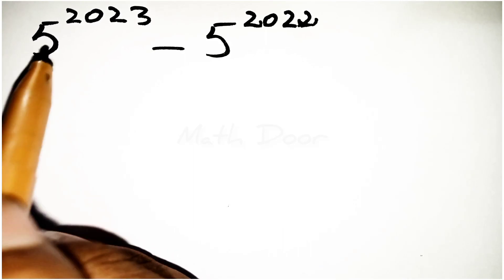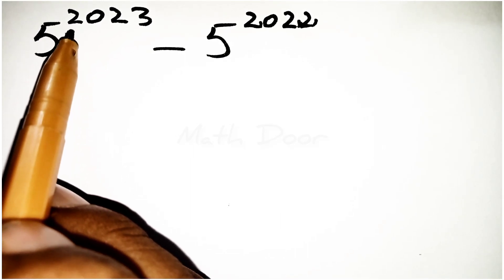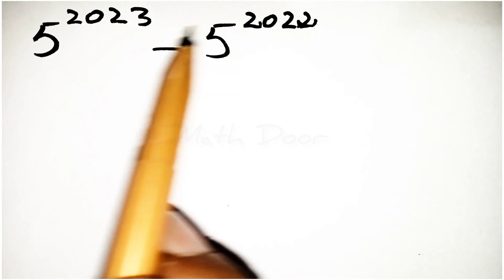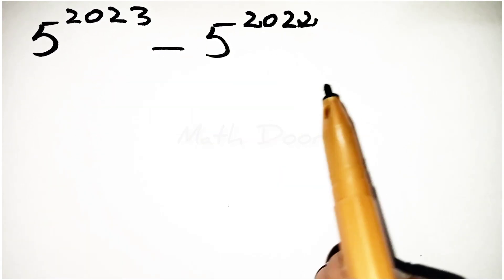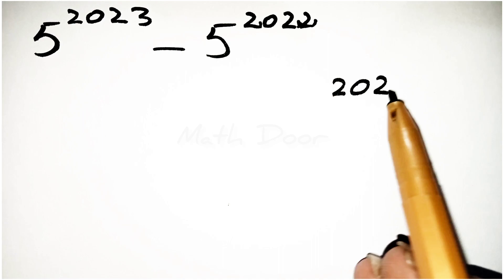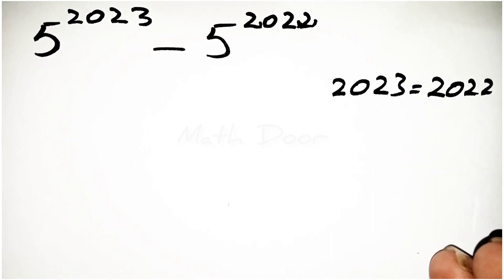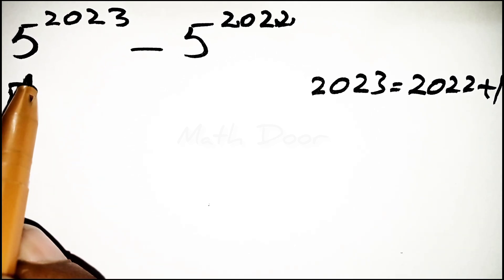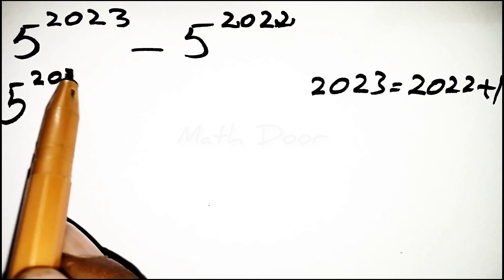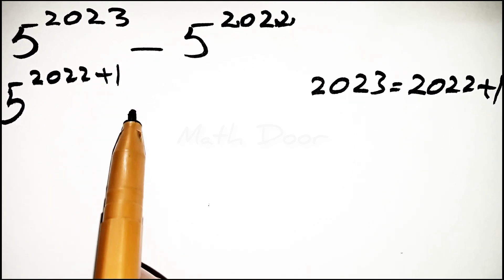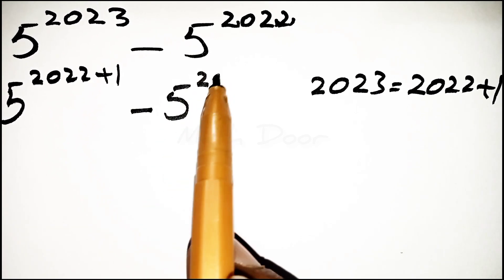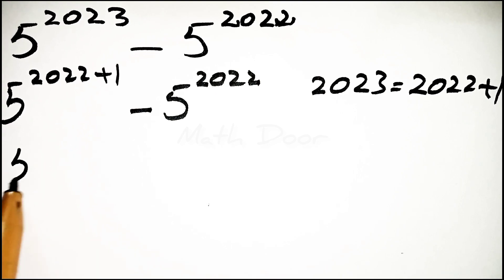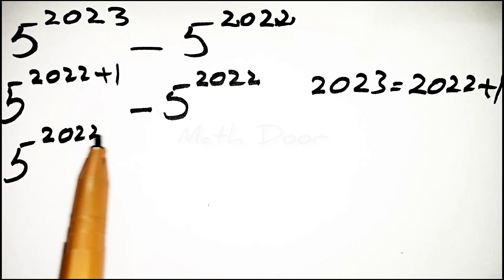Hello math lovers, today our topic is 5 power 2023 minus 5 power 2022. First of all, we can write 2023 as equal to 2022 plus 1. Now we write this as 5 power 2022 plus 1 minus 5 power 2022.